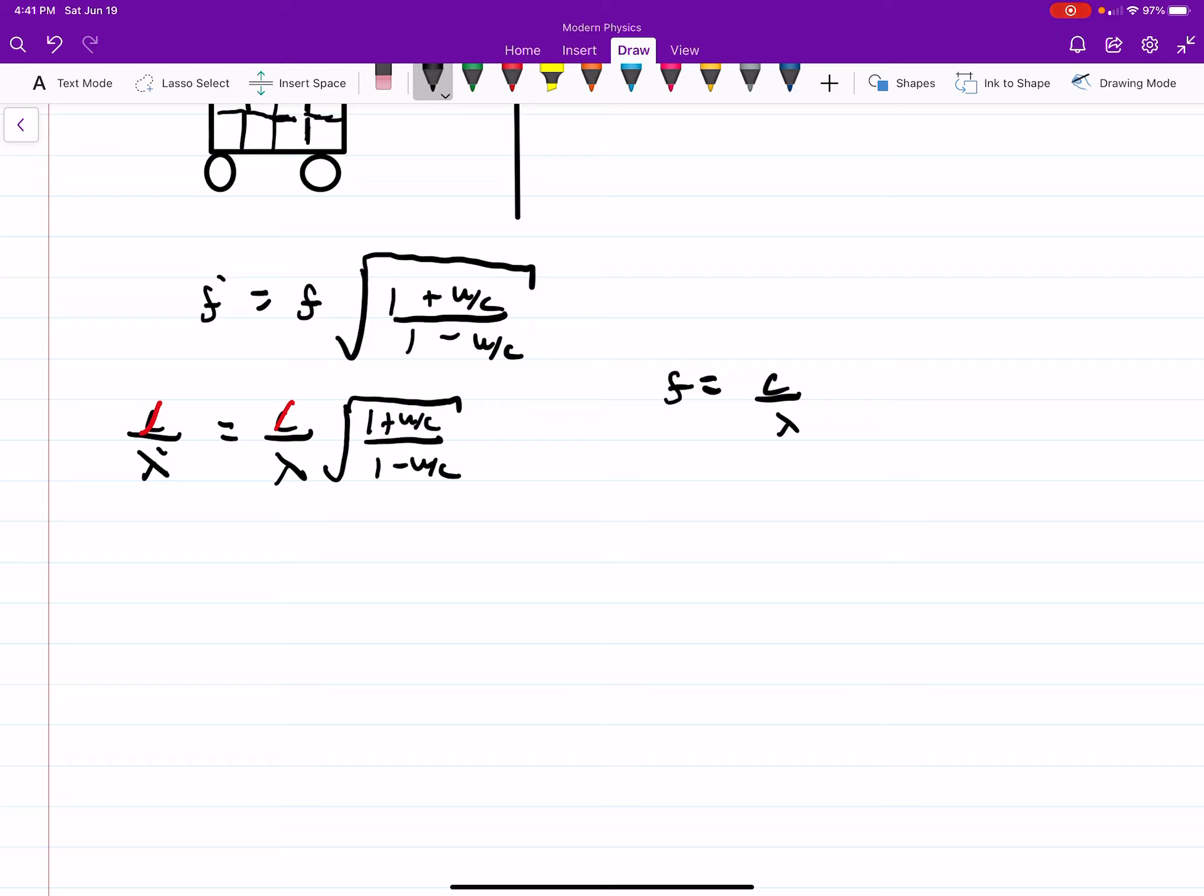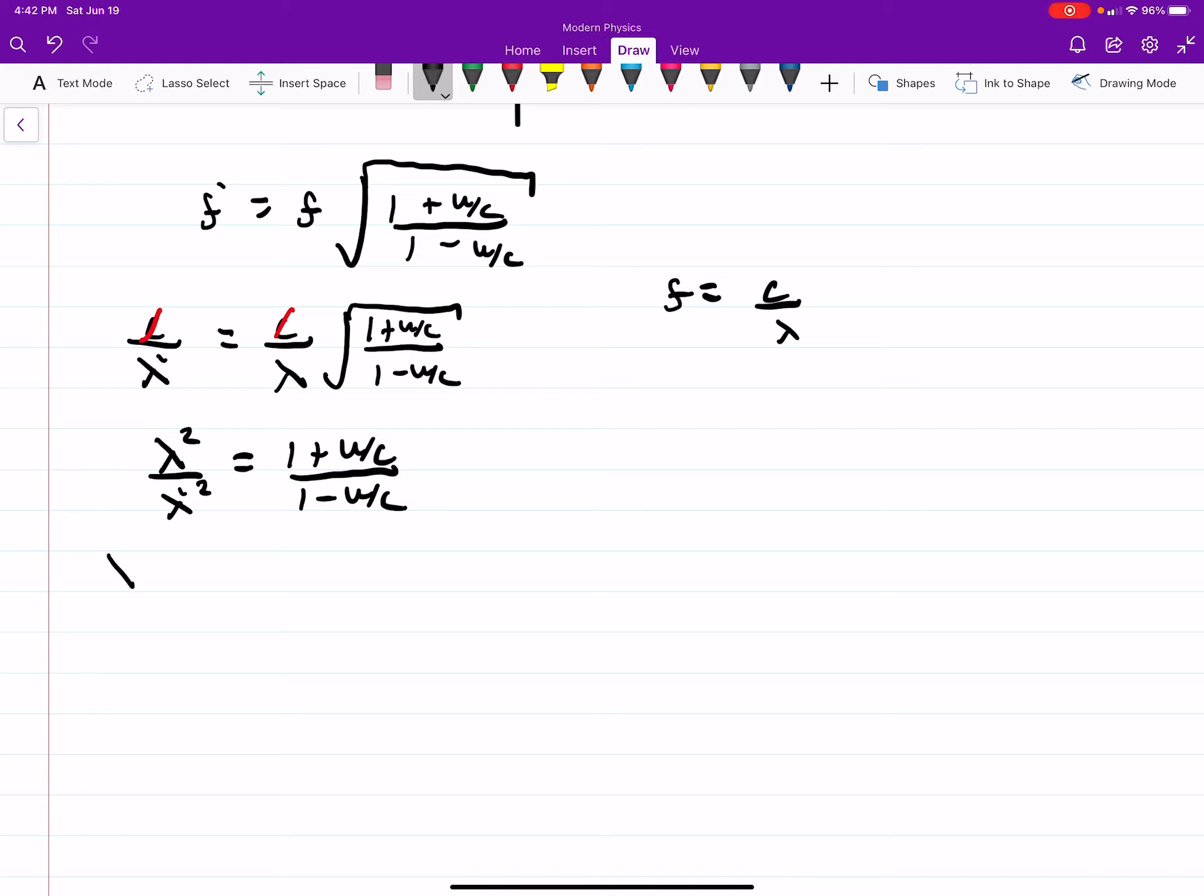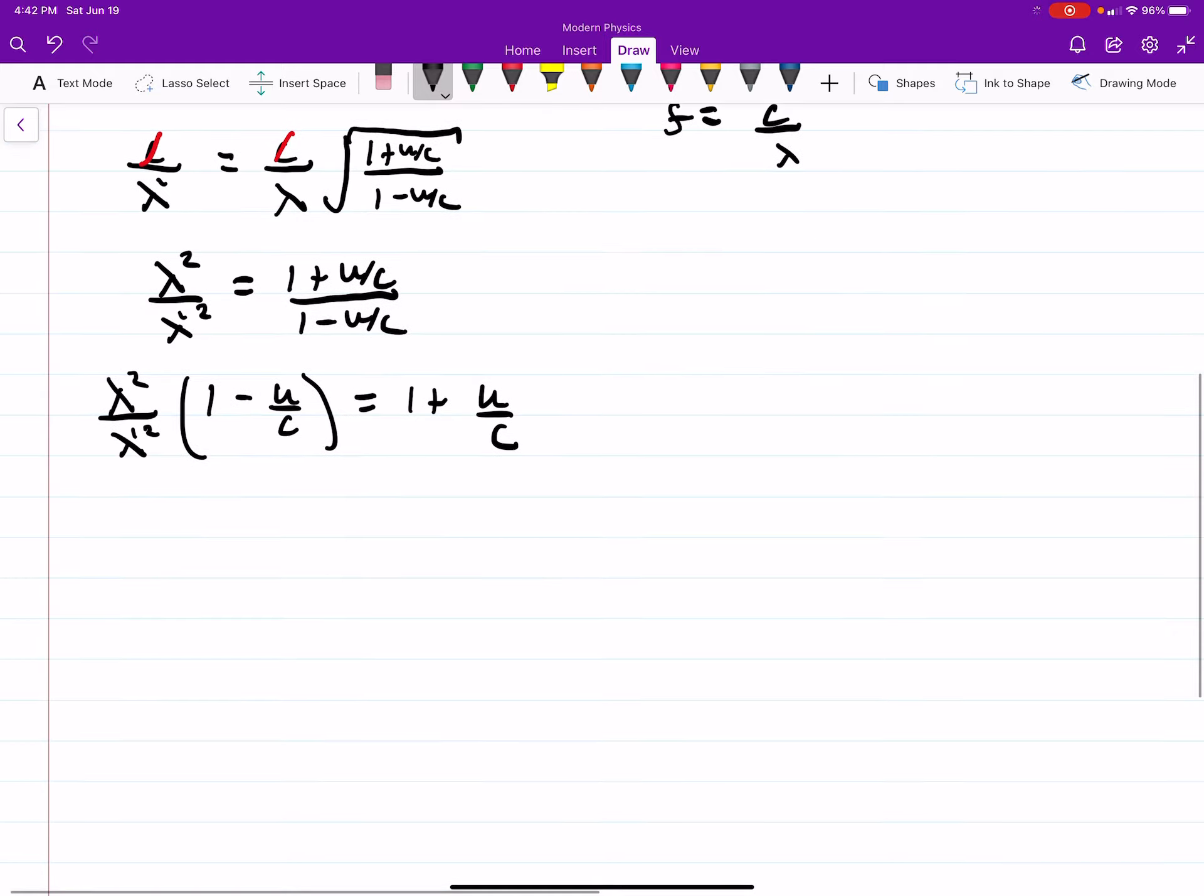They both have the speed of light c there, so that's going to go away. And the question is, what is the speed u? What is the speed of our reference frame? So lambda squared divided by lambda prime squared equals 1 plus u over c divided by 1 minus u over c. And if you understood the last video, it's going to be a similar set of math to solve this.